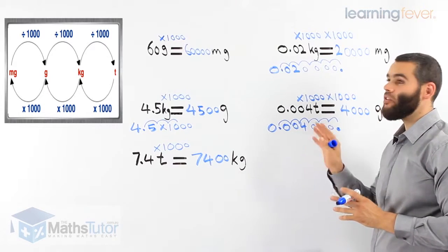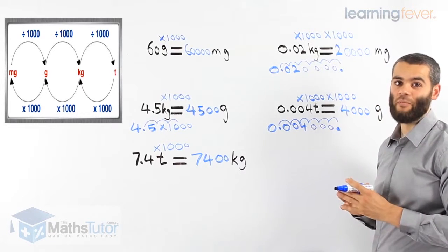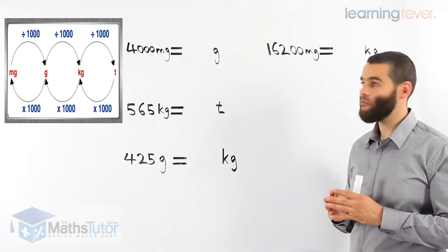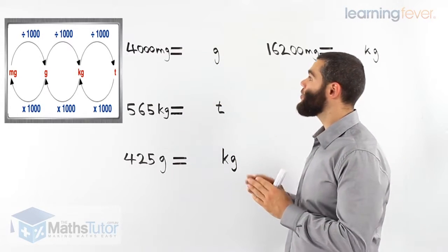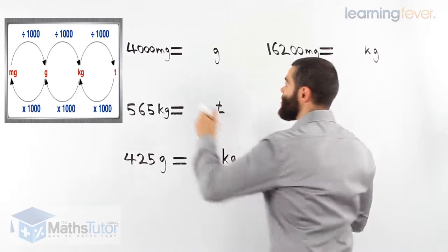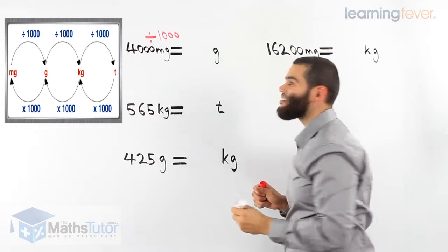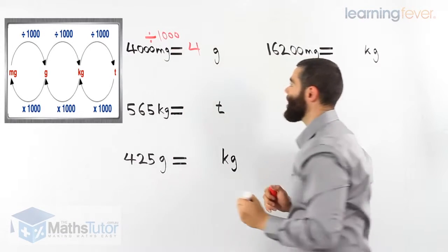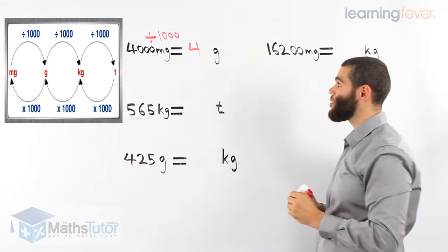Now I'm going to show you the other way around — going from small units of mass to large units of mass. We're going from milligrams to grams in this example. Going from milligrams to grams, we notice we have to divide by a thousand. Four thousand milligrams divided by a thousand is four grams. So four grams has four thousand milligrams. Very small unit the milligram is.